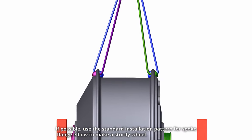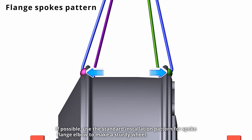If possible, use the standard installation pattern for spoke flange elbow to make a sturdy wheel.